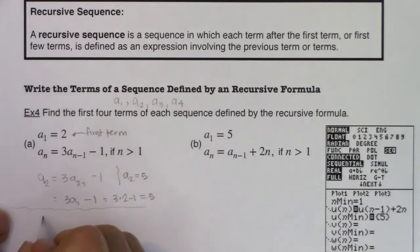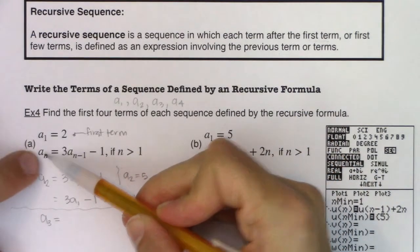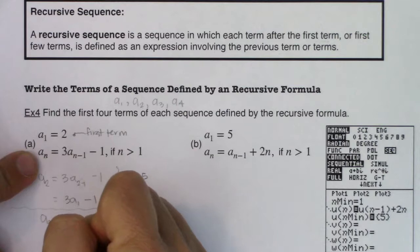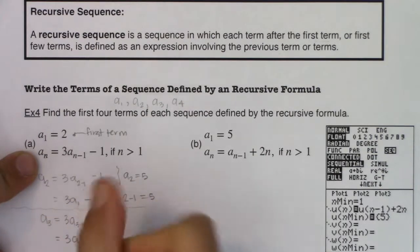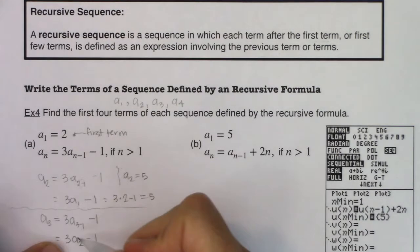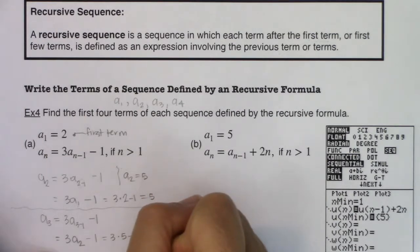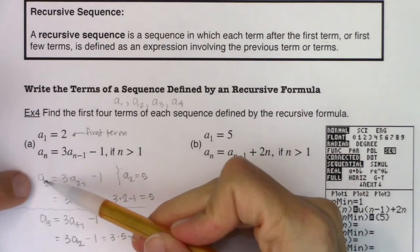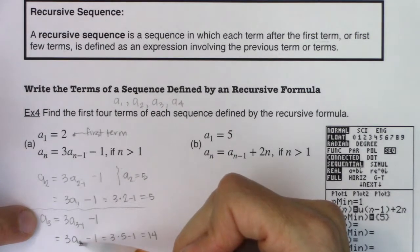Now let's find a₃. Substituting n=3 into the formula gives 3·a(3-1) - 1, which becomes 3·a₂ - 1. Since a₂ = 5, that's 3(5) - 1 = 14. So a₃ is defined in terms of the previous term a₂, which is exactly why we call this recursive — a₂ was defined in terms of a₁, and a₃ in terms of a₂.